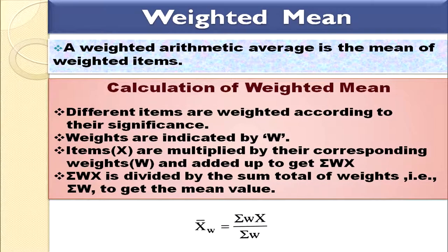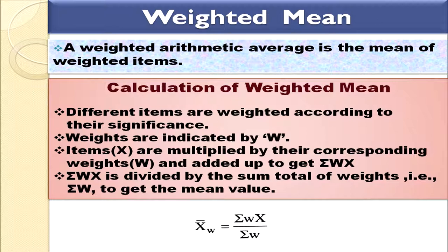Now we can discuss weighted mean. When are we going to compute weighted mean? We compute weighted mean when importance or significance is to be given to some of the items. Weighted mean is the mean of weighted items. The steps: weights are indicated by W; multiply items by their corresponding weights W to get Wx; add up to get summation of Wx; then divide by the sum of weights. So the formula is: weighted mean = Σ(Wx) / Σ(W).